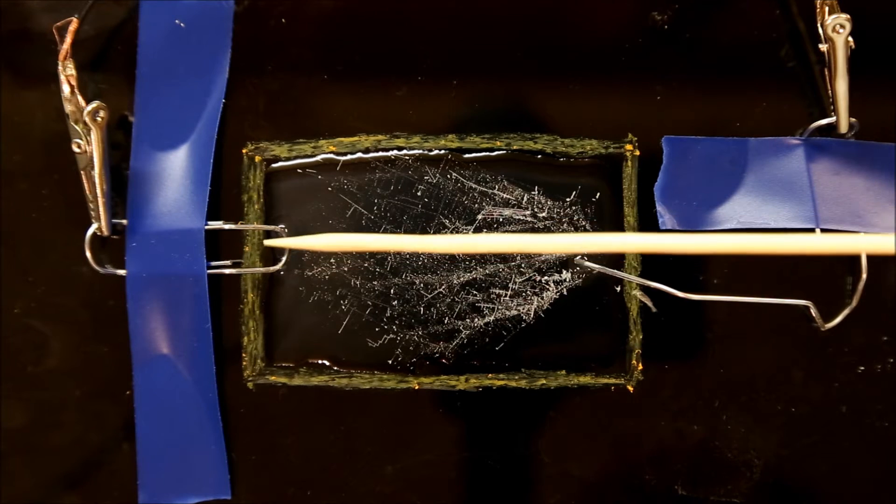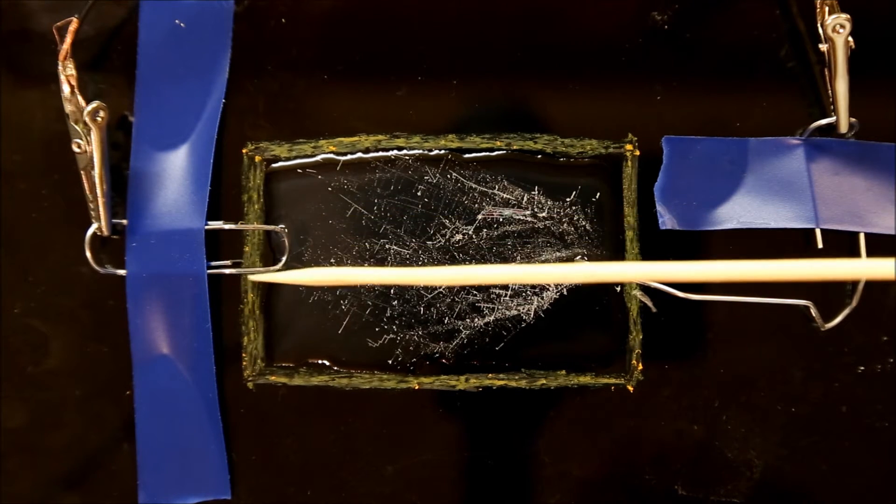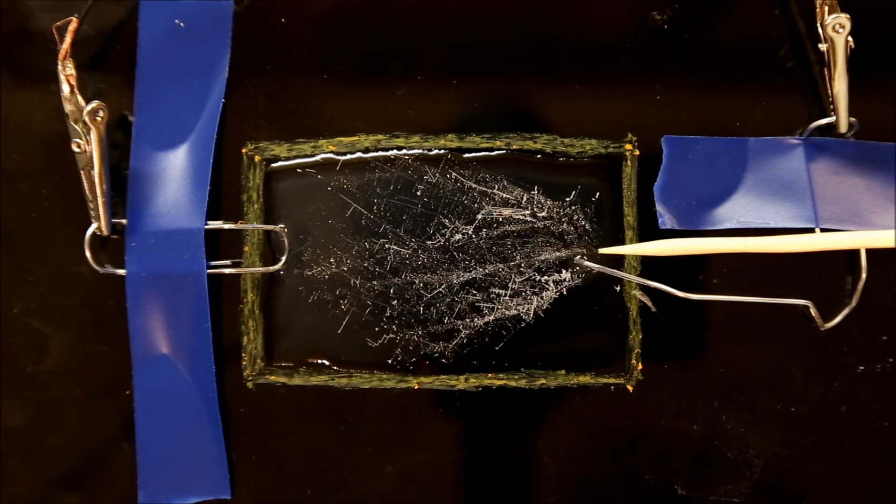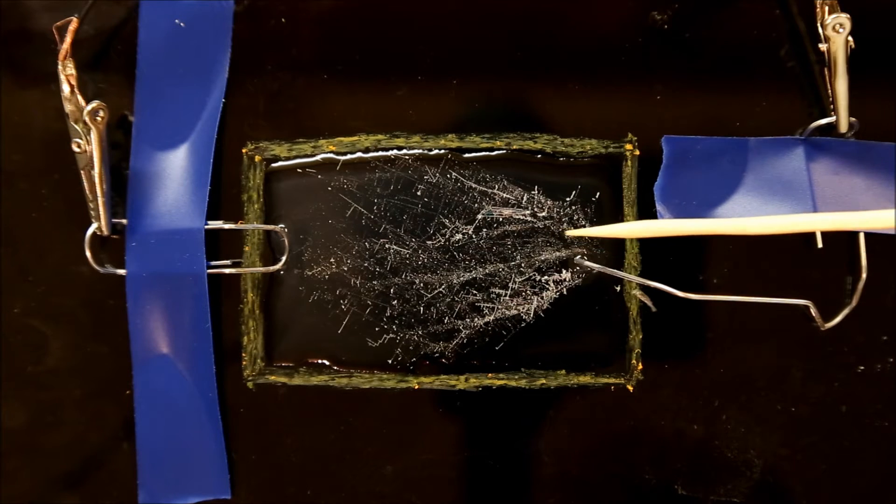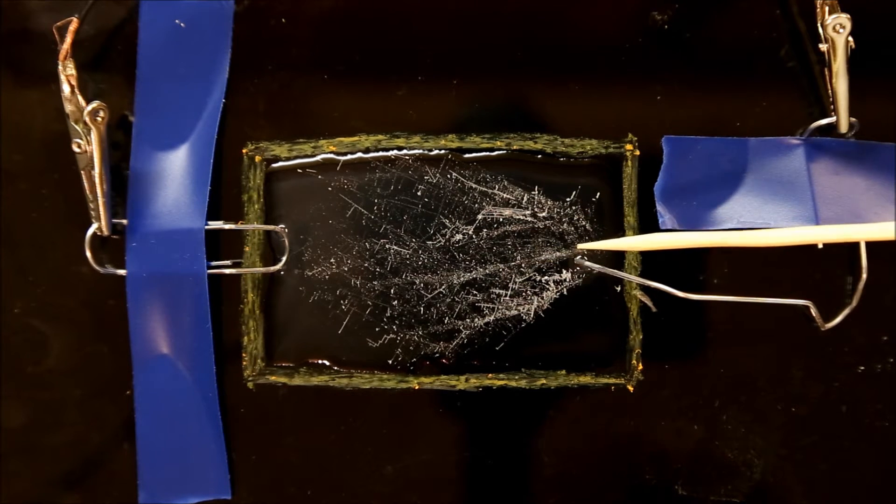For electrodes, I use large paper clips bent in a convenient shape, and it turns out it doesn't matter much whether you use smooth curves or sharp points. Once the crystals get started, they're growing in the middle here, and the electrode shape doesn't seem to matter a whole lot.